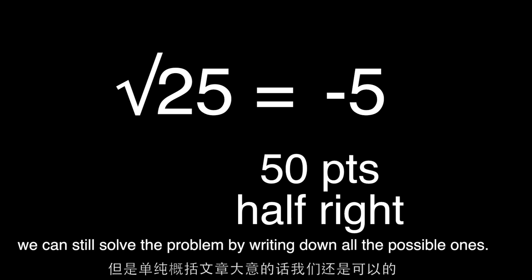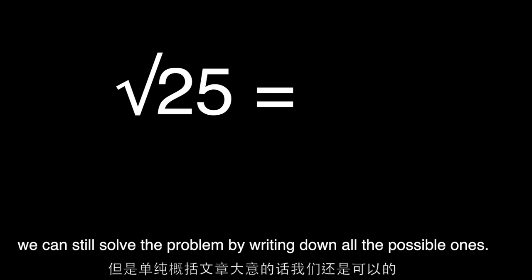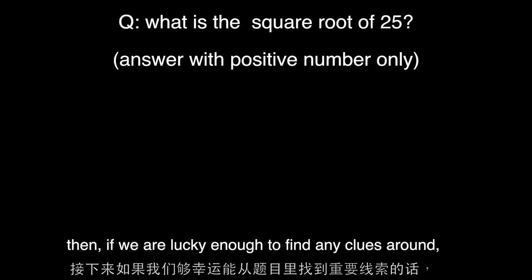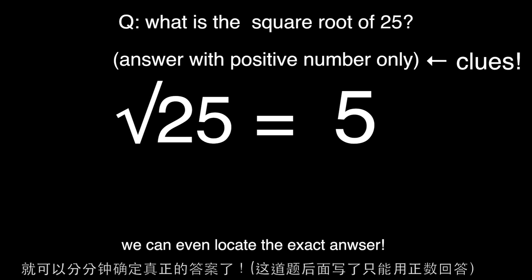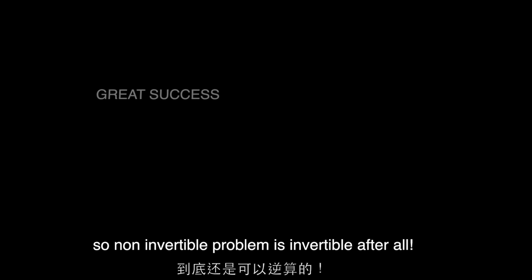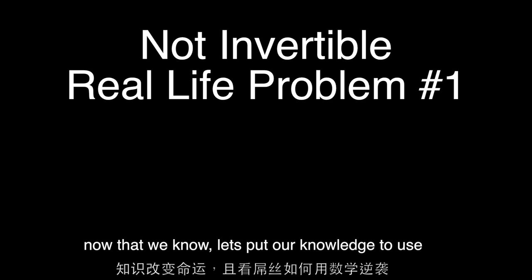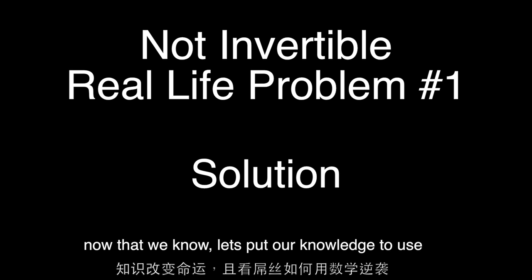Even though there's no way to be exactly sure about the answer, we can still solve the problem by writing down all the possible ones. Then, if we are lucky enough to find any clues around, we can even locate the exact answer. So a non-invertible problem is invertible after all. Now that we know, let's put our knowledge to use.